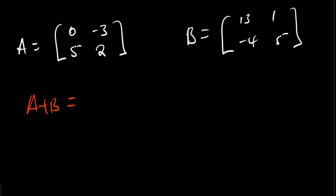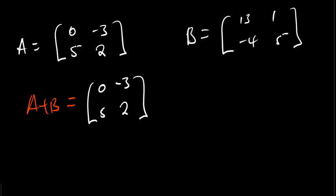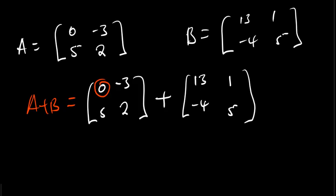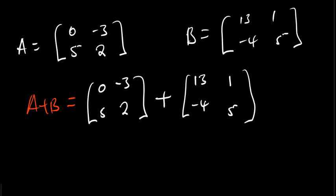Adding A plus B, the way you are going to be adding them, they will just correspond to each other. So this is going to be 0, 5, then negative 3, 2, plus 13, negative 4, 1, 5. Corresponding figures are going to be added to each other.